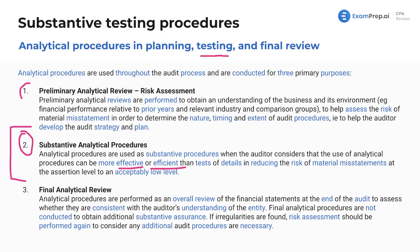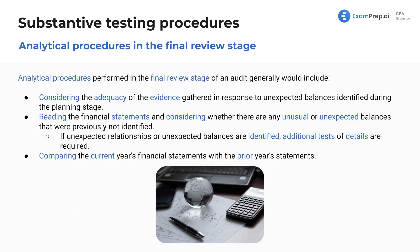You're only doing substantive procedures to obtain reasonable assurance during the testing phase. If you hit the final analytical review phase and find some irregularities, you have to go back to the testing phase. Final review procedures include: considering the adequacy of evidence gathered in response to unexpected balances identified during planning, reading the financial statements to identify unusual or unexpected balances not previously identified, and if any unexpected relationships or balances are found, additional tests of details are required.